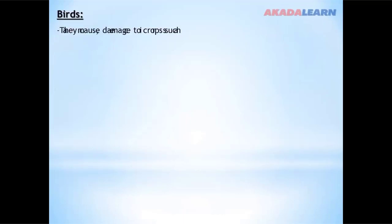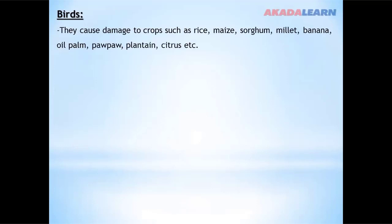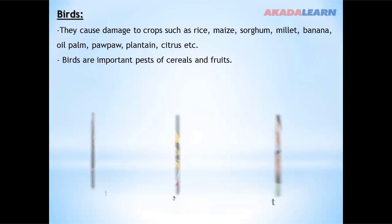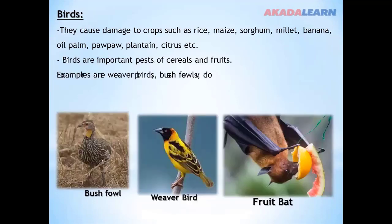Birds that are crop pests cause damage to crops such as rice, maize, sorghum, millet, banana, oil palm, plantain, and citrus. Birds are important pests of cereals and fruits. Examples include weaverbirds, bush fowls, doves, parrots, fruit bats, and many more.